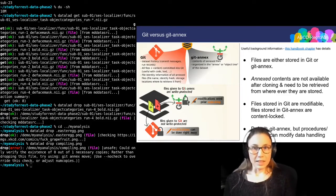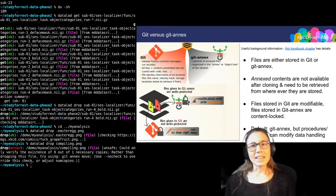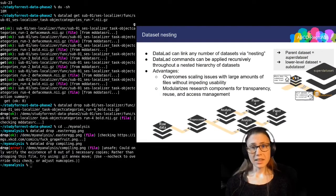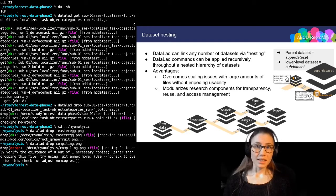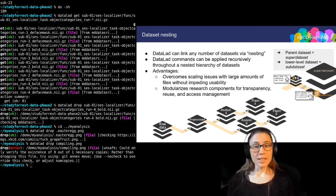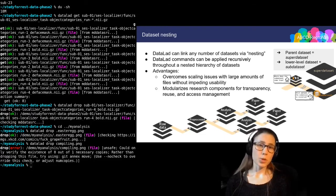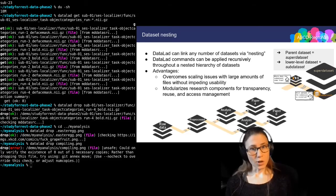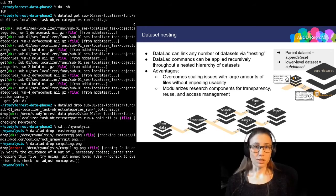The next feature I want to highlight is that DataLad can link any number of datasets together. We call this nesting because with this feature, a dataset can include other datasets in a hierarchical order. A dataset that contains another dataset is sometimes called a super dataset, and the included dataset is then called a sub dataset. But apart from the hierarchy level, there's no difference between them.